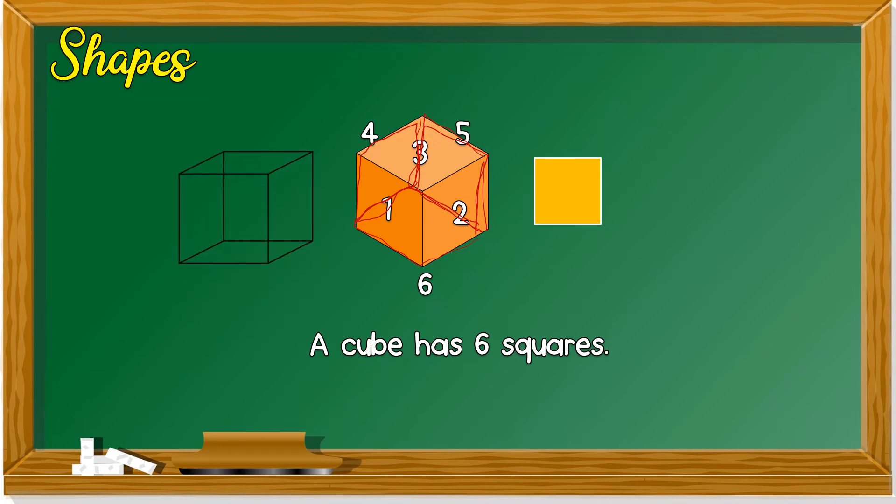Like this. 1, 2, 3 in front here, 4, on top 5, below 6. Six squares.